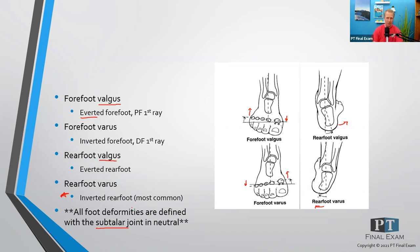All of these are defined with the subtalar joint in neutral. So very often you'll assess these with the patient in prone — patient prone with their leg hanging off the edge of the table. You get the tibia and the talus lined up, get the ankle joint into neutral, and then have the subtalar joint in the neutral position. Then you observe to see if the calcaneus is deviated medially or laterally, or if the forefoot is too high or too low.